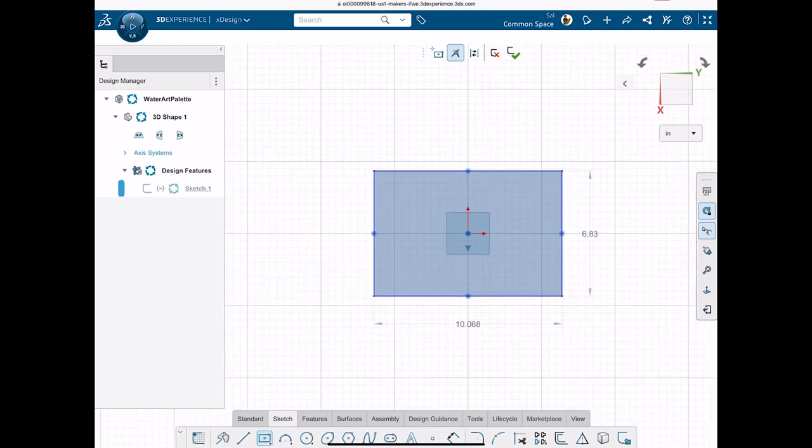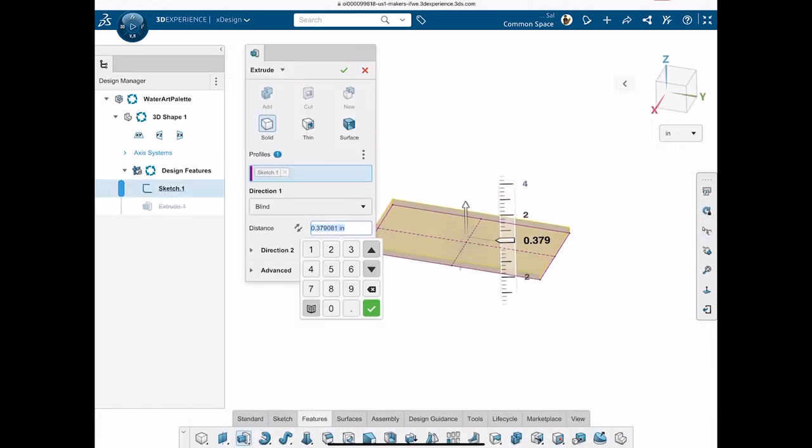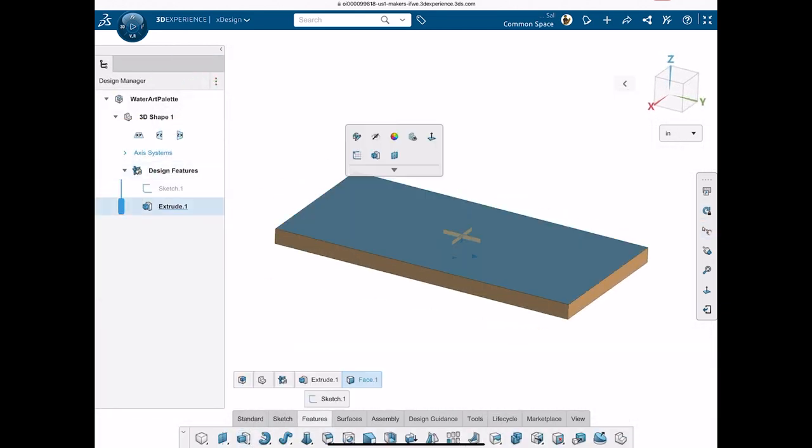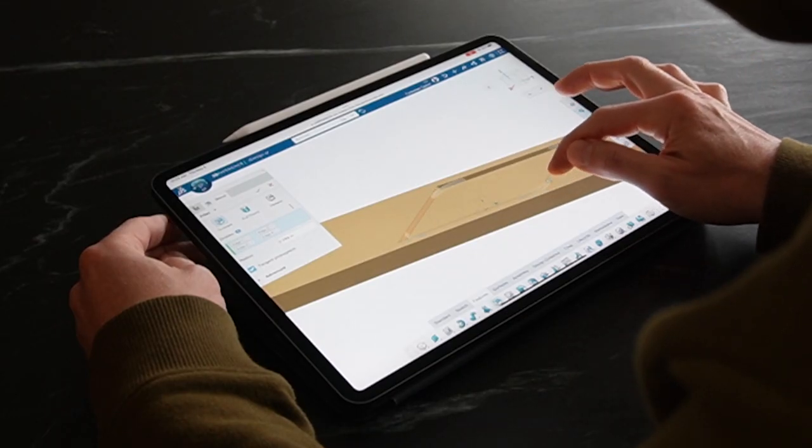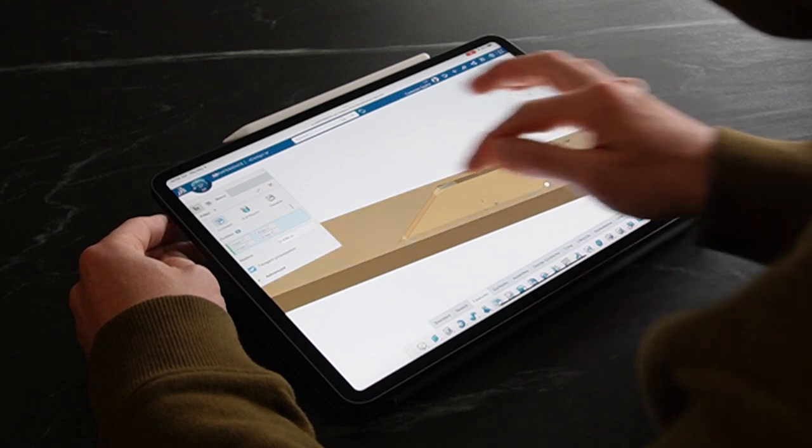A SOLIDWORKS for Makers license comes with Xdesign, a browser-based CAD tool that lets me design whenever and wherever I want. Here, I'm working on a tablet to model the wood and figure out exactly where I want the tile to be placed.